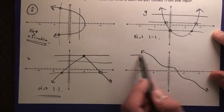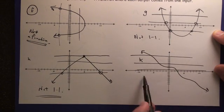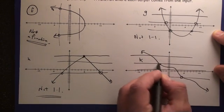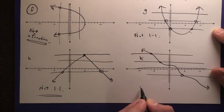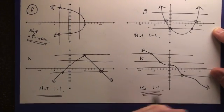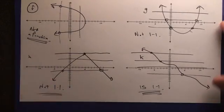Now what about function k? Well, each of these horizontal lines, you're only touching the graph at one place. So therefore, this is one-to-one. This passes the horizontal line test.